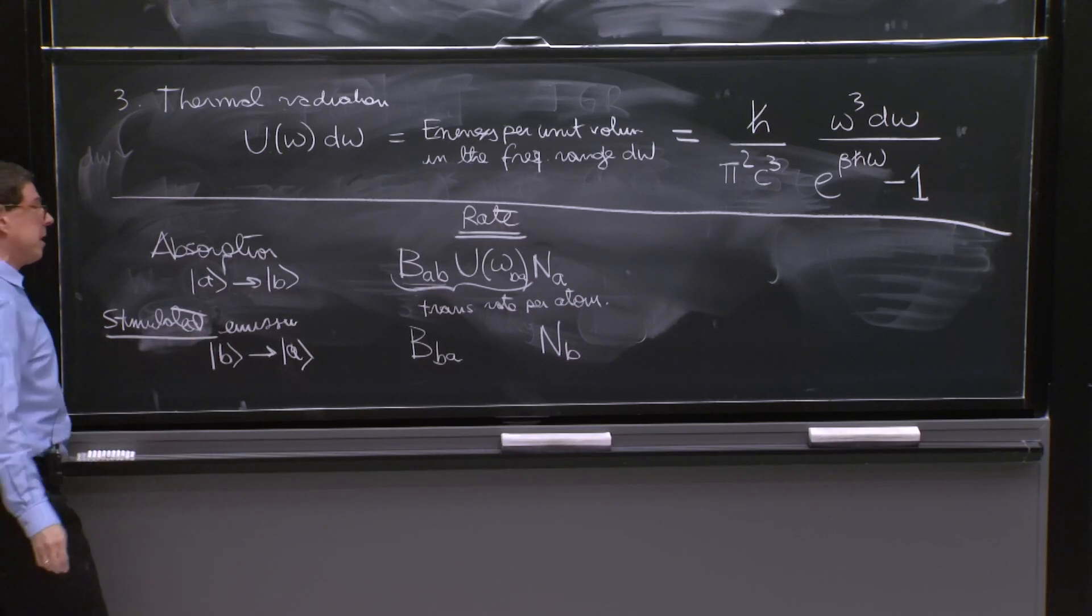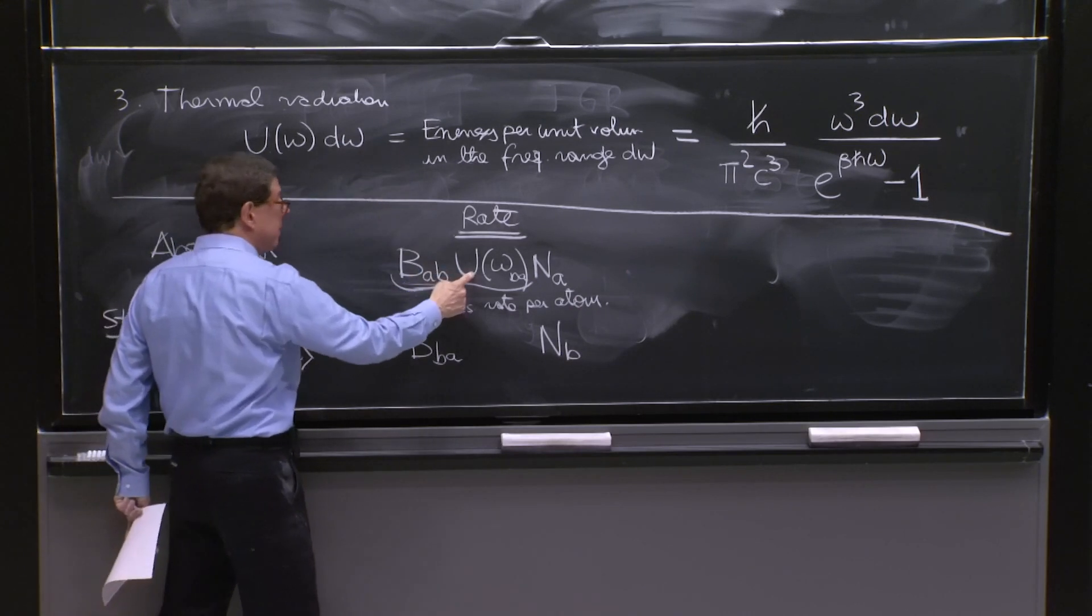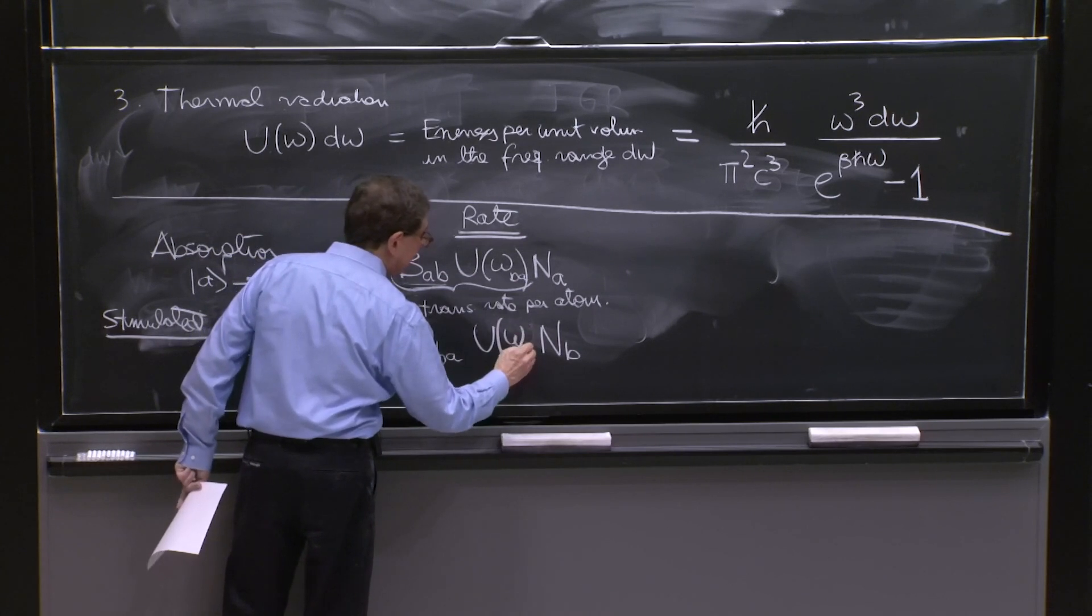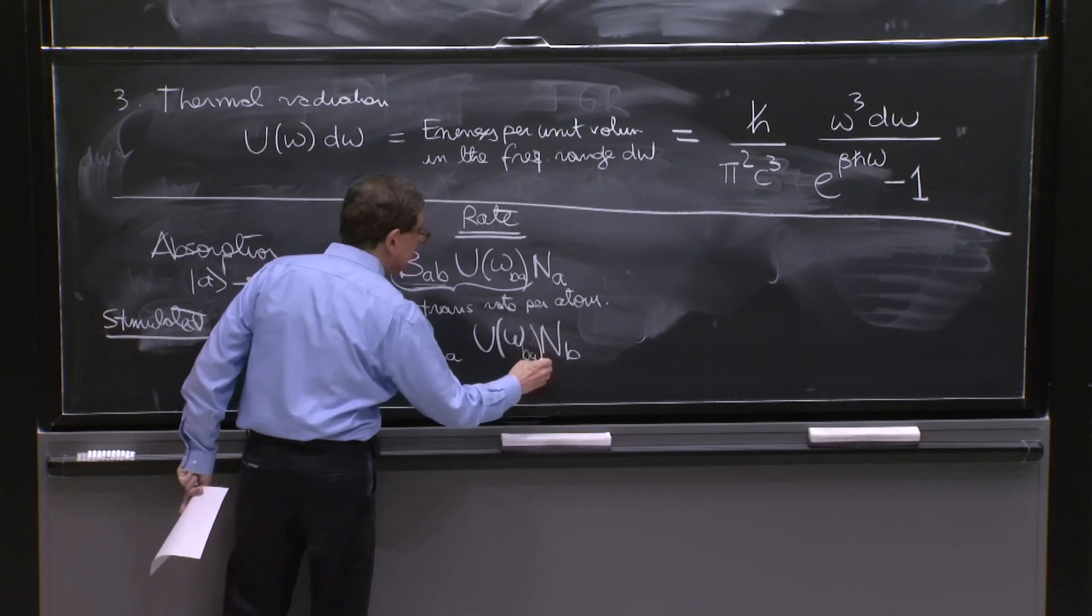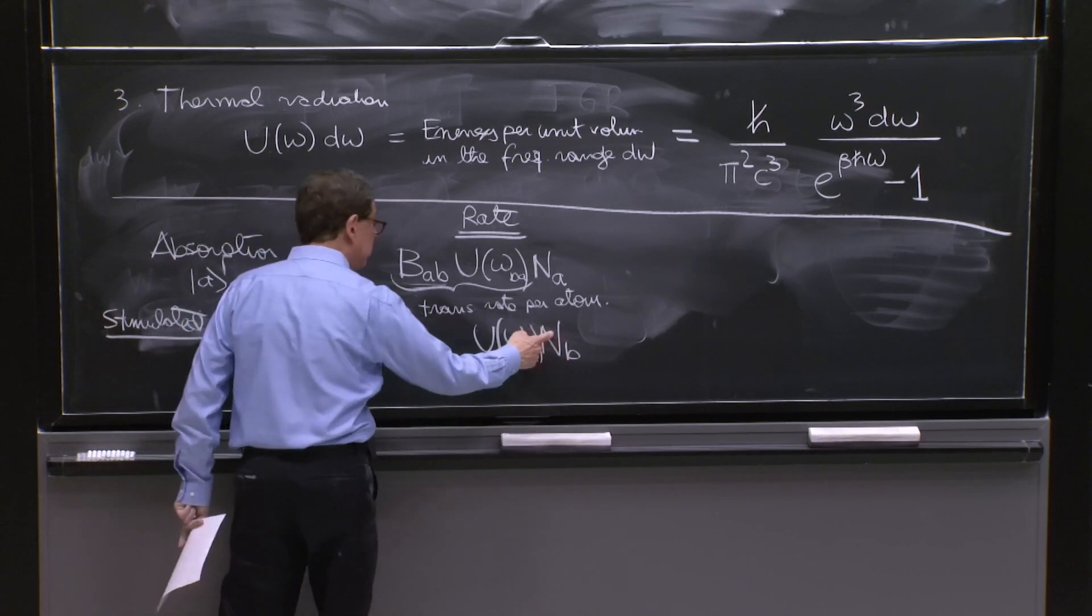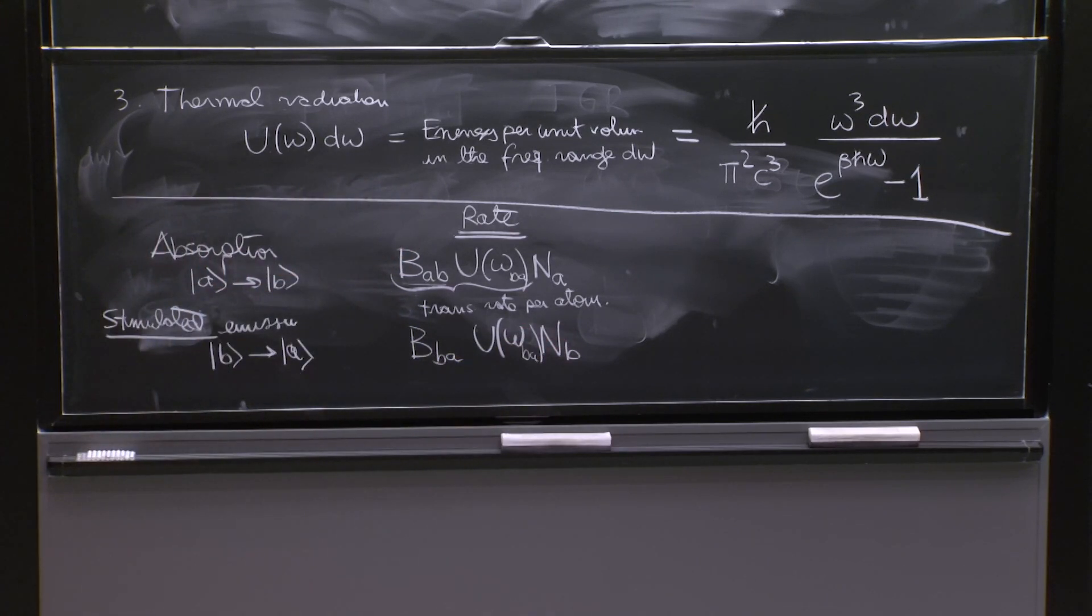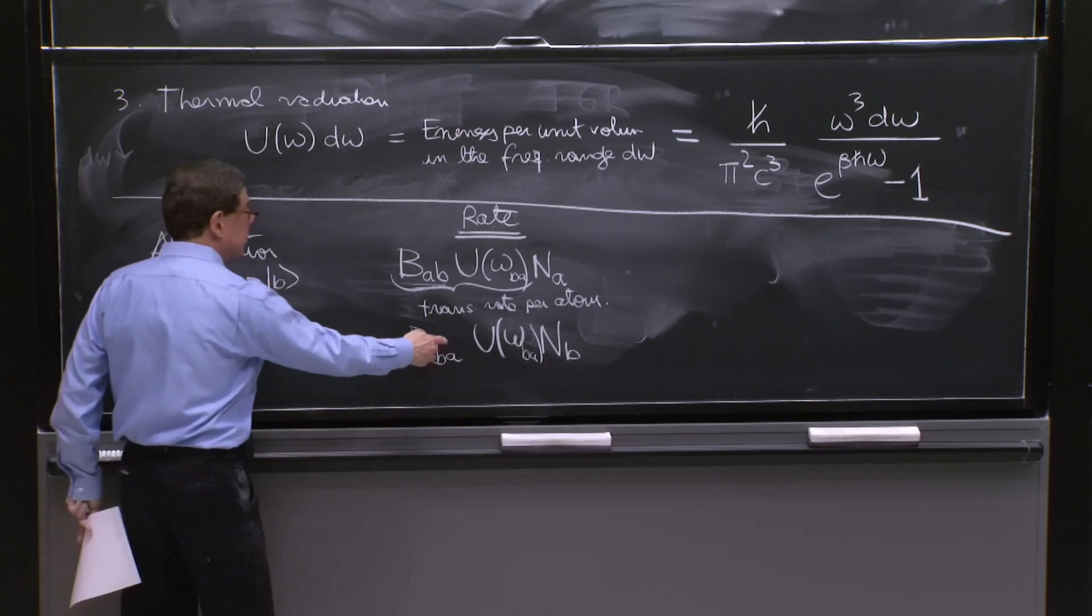This is the one we're considering. It's stimulated by the radiation, so it's also proportional to the number of photons present and proportional to the number of atoms that can be convinced to do the transition times another coefficient BBA.